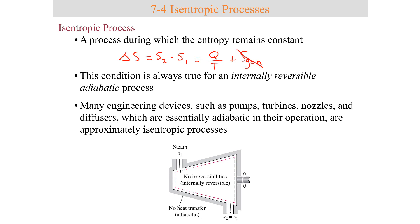For a closed system that is reversible, S_gen is zero. And if it is adiabatic, there is no heat transfer, so the entropy transferred by heat is also zero. If the system is closed, internally reversible, and adiabatic, the entropy change ends up being zero.